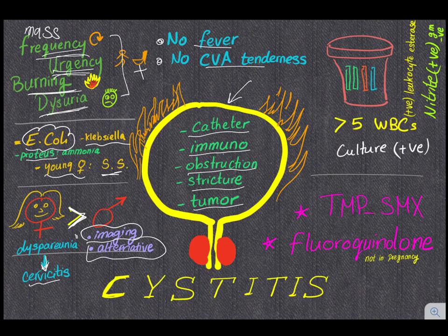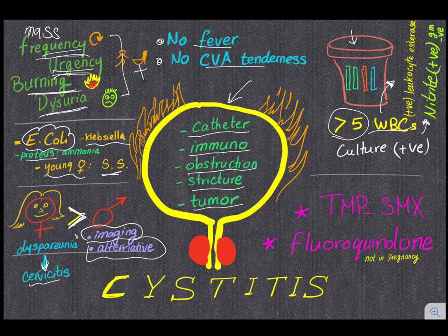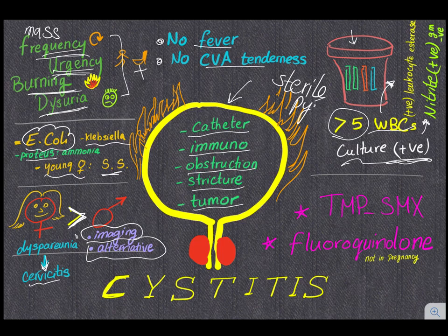To diagnose cystitis, urinalysis will show more than five white blood cells and positive leukocyte esterase. If it's a gram-negative bacterium such as E. coli, nitrites will also be positive. You can do a culture, which will be positive for the organism. Note that sterile pyuria means pus in the urine but a negative culture — organisms responsible include Chlamydia trachomatis and Neisseria gonorrhoeae.